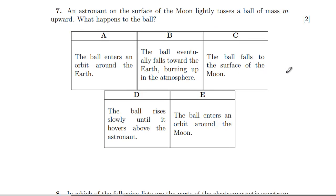Question 7: an astronaut on the surface of the moon lightly tosses a ball of mass m upwards — what happens? It's definitely going to fall back down to the moon's surface; it won't enter orbit around the Earth or burn up in the atmosphere. The answer is straightforwardly that it falls back to the surface of the moon — a very easy mark.